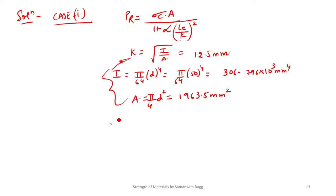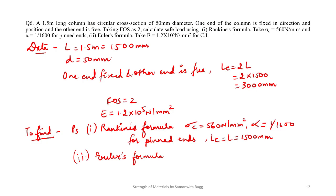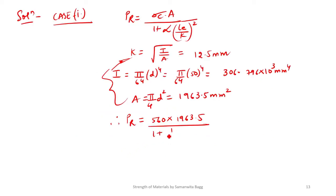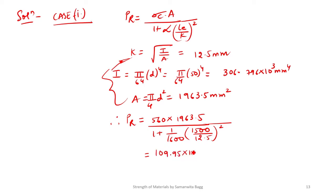Substituting all values: PR = 560 into 1963.5 upon (1 + (1/1600) into (1500/12.5)²). For Rankine's formula, LE is 1500 mm and K is 12.5 mm. Solving this gives PR = 109.95 into 10³ N.